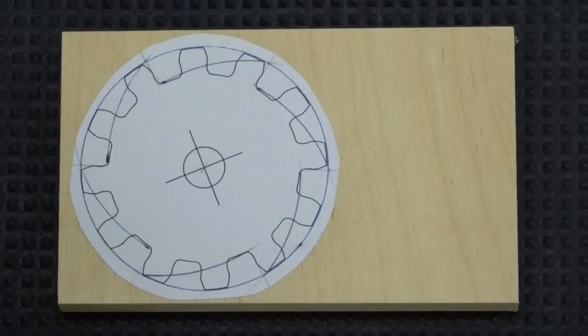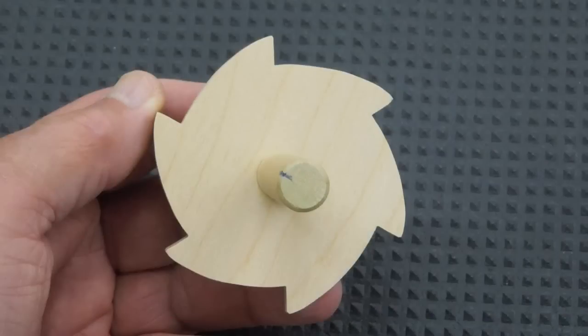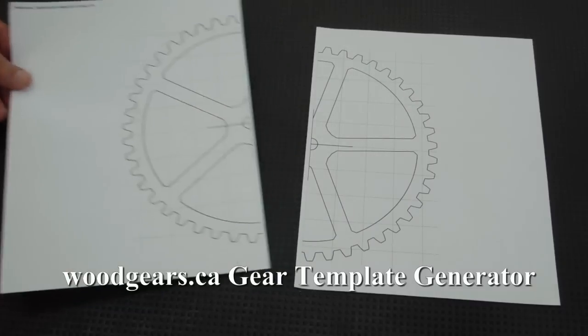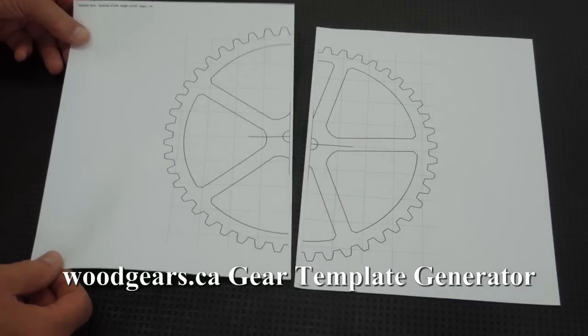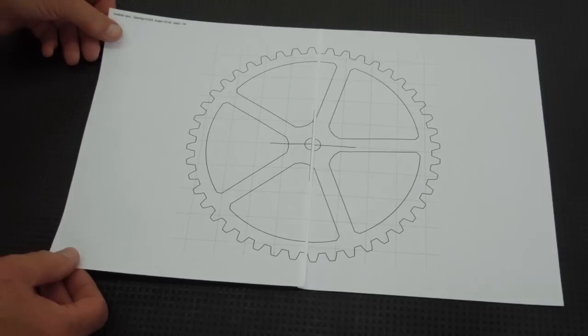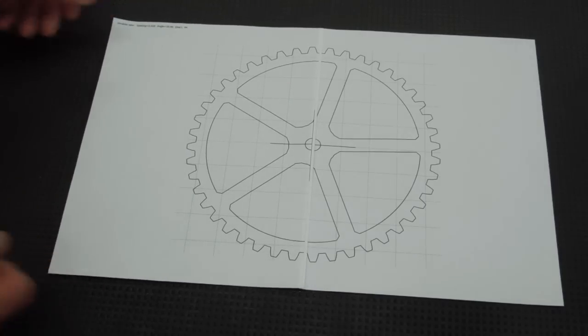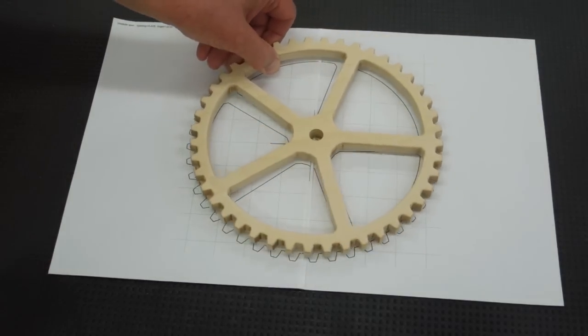This is a 12 tooth gear and it will be a 6 tooth ratchet. I wanted to make a fairly large gear using Matthias' gear template generator. I printed this on two sheets, joined them together so I could make a large gear.